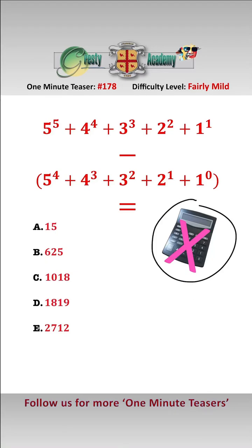With no calculator allowed, a quite neat way to do this is to write 5^5 as 5 times 5^4, and 4^4 as 4 times 4^3, and 3^3 as 3 times 3^2, and 2^2 as 2 times 2^1.